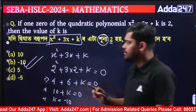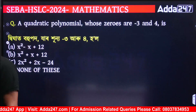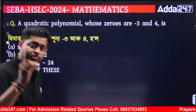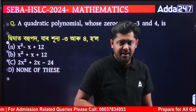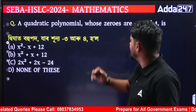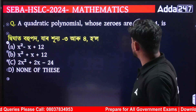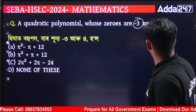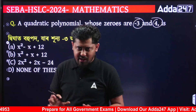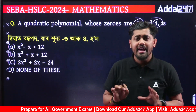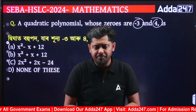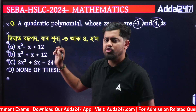Okay, next question. In the quadratic polynomial, we can see that if you are in a quadratic polynomial, this zero is minus three and this zero is minus four. That means if zero is in every single one.